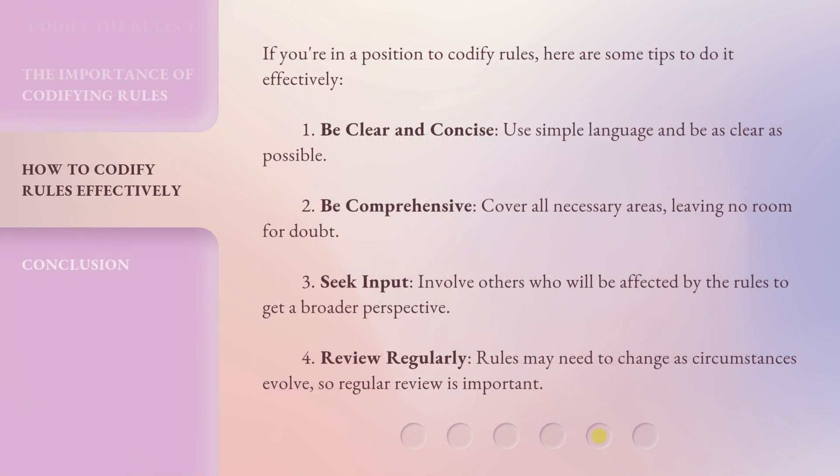If you're in a position to codify rules, here are some tips to do it effectively. One: be clear and concise — use simple language and be as clear as possible. Two: be comprehensive — cover all necessary areas, leaving no room for doubt. Three: seek input — involve others who will be affected by the rules to get a broader perspective. Four: review regularly — rules may need to change as circumstances evolve, so regular review is important.